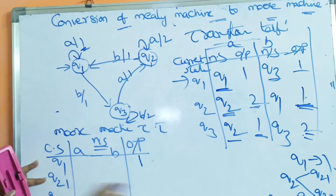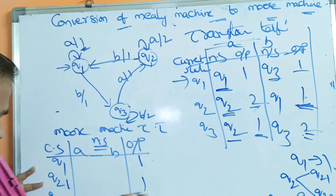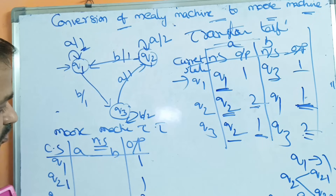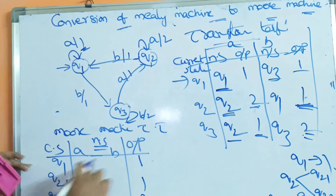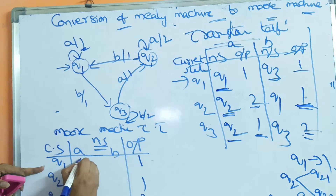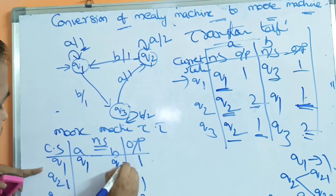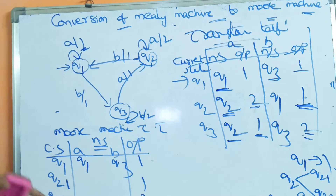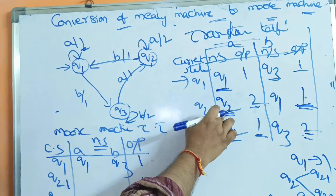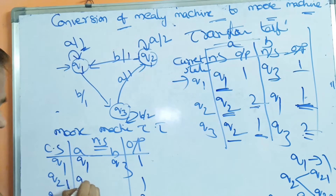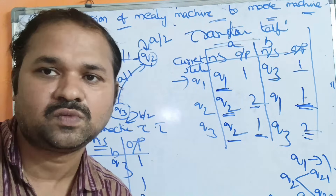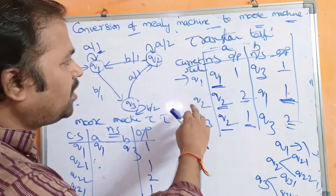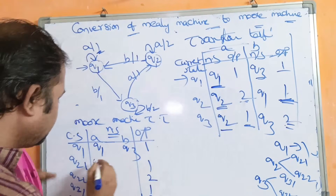The outputs are: Q1 output is 1, Q2-1 output is 1, Q2-2 output is 2, Q3-1 output is 1, Q3-2 output is 2. Now filling transitions: Q1 on a goes to Q1. Q2-1 on a — since Q2 on a goes to Q2 with output 2 — goes to Q2-2.